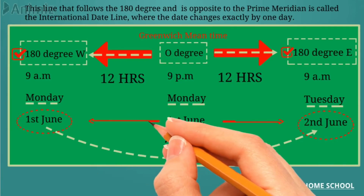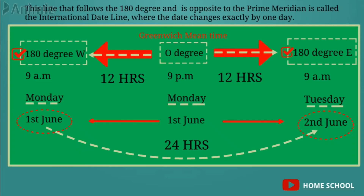If we travel east to west across the international date line, we will lose a day. If we travel west to east across the international date line, we will gain a day.